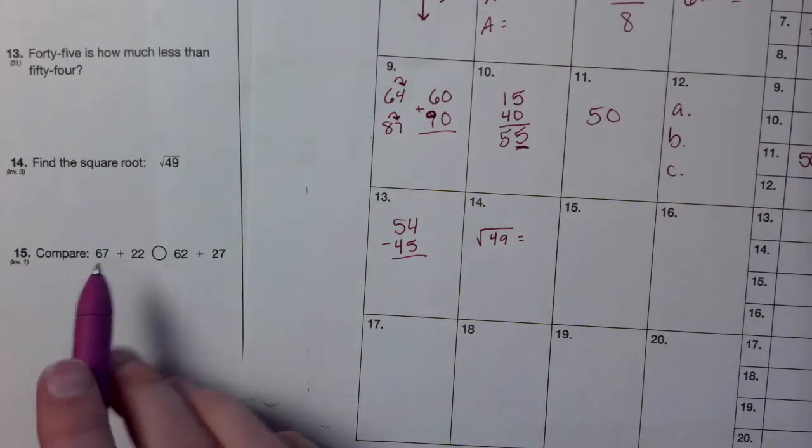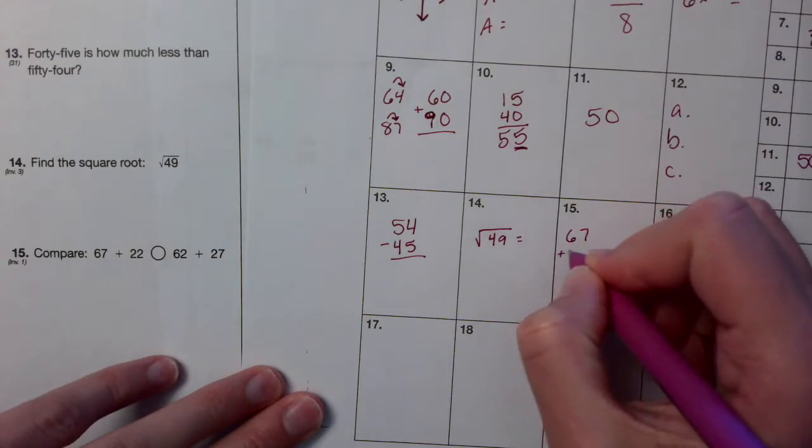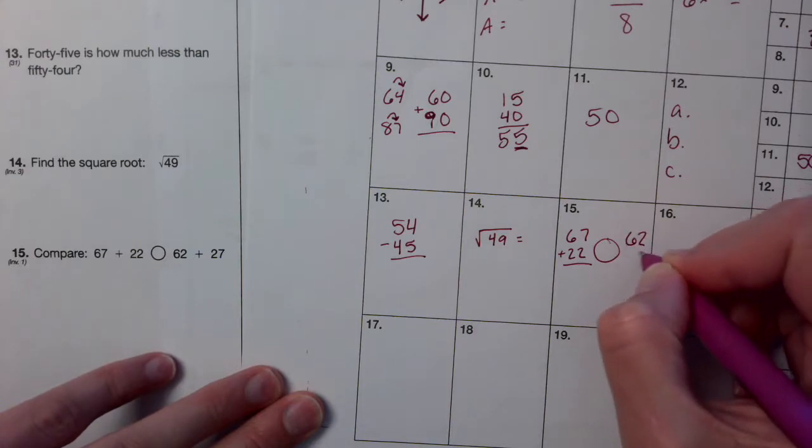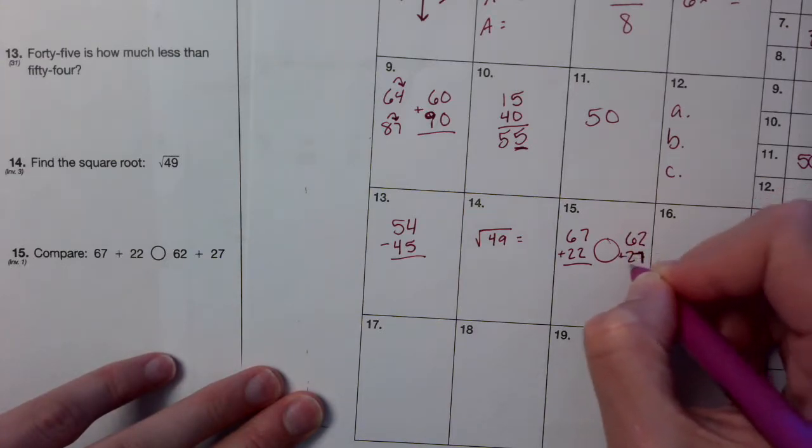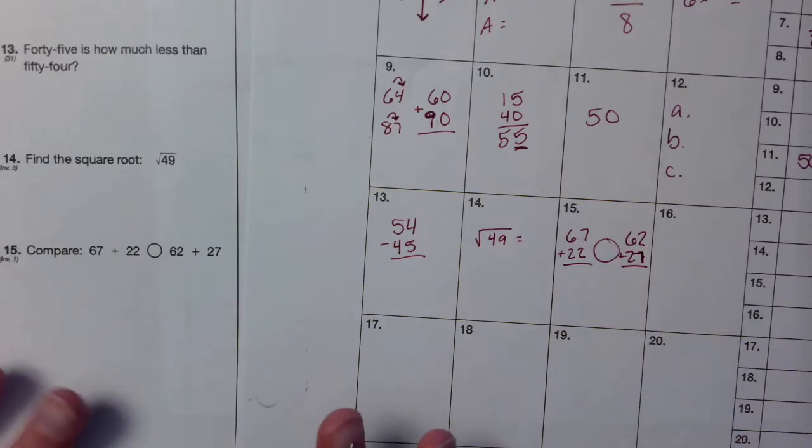14, you're going to find the square root of 49. What number times itself equals 49. 15, you've got to compare. 67 plus 22 is less than, greater than, or equal to 62 plus 27. Add those together. Is it less than, greater than, or equal to each other?